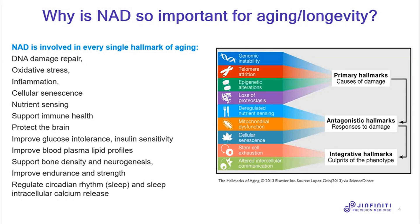If you look at the hallmarks of aging that many people talk about — I'm not really a big fan of the hallmarks because I think it's a good starting point but does not address all the issues — but if you look at the nine best known hallmarks of aging, almost every single one involves NAD. Because over 400 enzymes require NAD for their function, you can imagine many of these important biological processes require NAD to function properly.